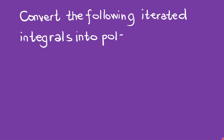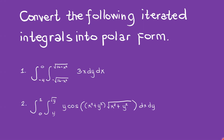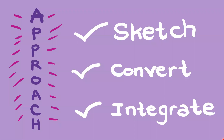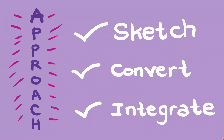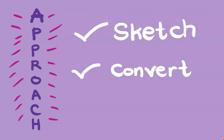Our goal here is to convert the following iterated integrals into polar form. In the first part, we enumerated three steps para mas organized ang solution natin: sketch, convert, integrate. So dito sa ating second set of exercises, convert lang naman natin yung integrals into polar form. So we can skip yung part kung saan kailangan nating mag-integrate. Ang required lang sa atin ay to convert into polar form — sketch pa rin yung region of integration, tapos convert. Then we have our final answer.